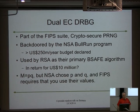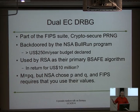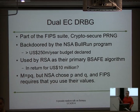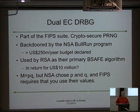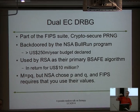Then we have Dual_EC_DRBG — $10 million into RSA. The NSA chose the values of P and Q. It's now a government standard; if you have FIPS certification you have to implement Dual_EC and use the P and Q values they told you. If you know one of those values, in theory it gives you a very good shortcut into predicting the next sequence.